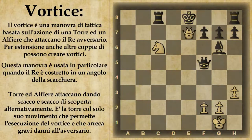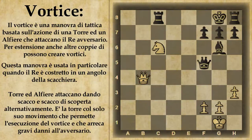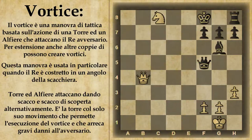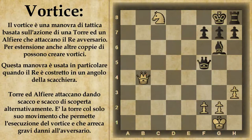Il nero può o muovere il re o frapporre la donna. Ovviamente se frappone la donna semplicemente la perde e non ha risolto alcuno dei propri problemi. Supponiamo che muova il re: se muove il re in e8 prende immediatamente matto. Quindi dovrà forzatamente muovere il re in g8. A questo punto entra il primo scacco dato dal cavallo, e il nero non ha altro che muovere il proprio re in f8. Ora però il nero si è liberate delle vie, perché il cavallo si è mosso: potrebbe frapporre o la torre o la donna sull'attacco di scoperta dato dal cavallo.